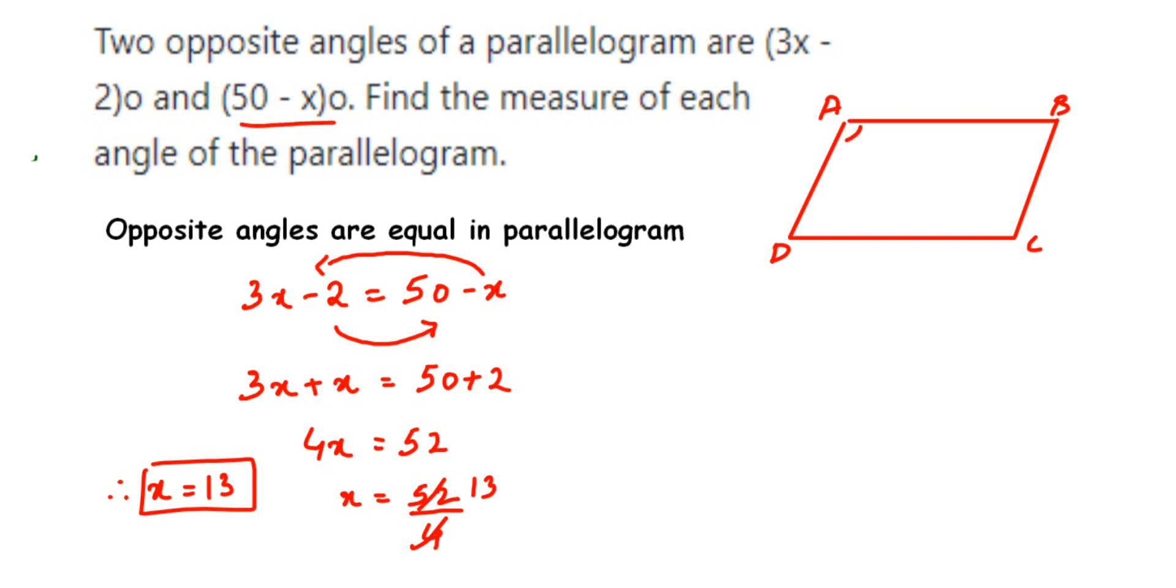Suppose A is 50 - x. We got the x value, so 50 - x is 50 - 13 = 37°. So one angle is 37°, which means angle C will also become 37°. But we have to find out the other angles, that is D and B.